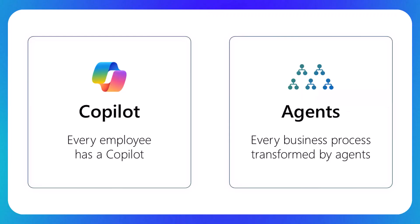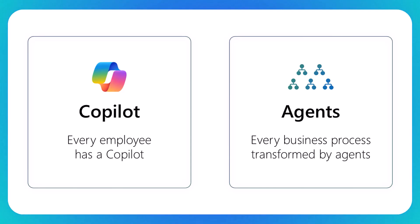First, I want to talk about Copilot and agents — two different terms that maybe many people have heard about but aren't quite sure what they mean. At Microsoft, we talk about Copilot and agents as two separate things: Copilot being your personal AI assistant that every employee in your organization will have. It's grounded in your work data, understands who you are and the data you're working on, so it feels even more personalized as you start to interact with it.